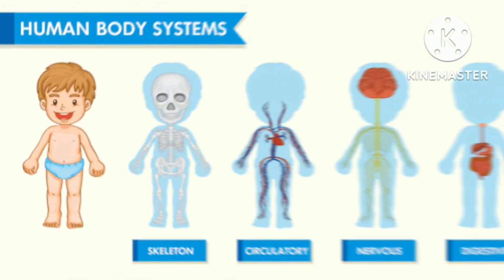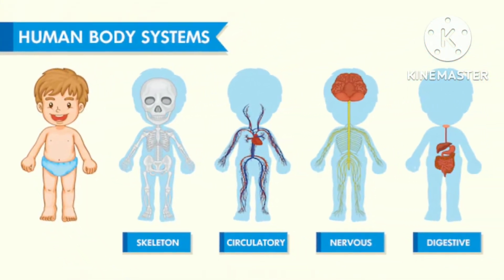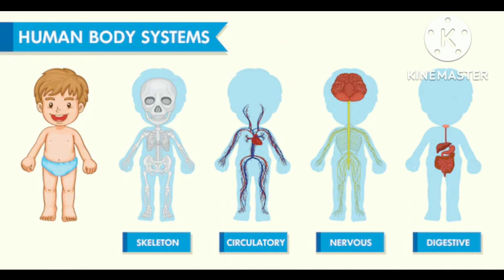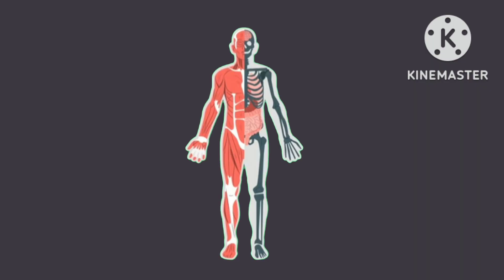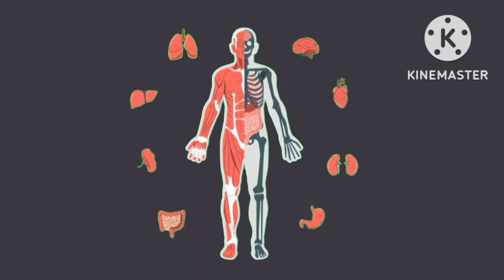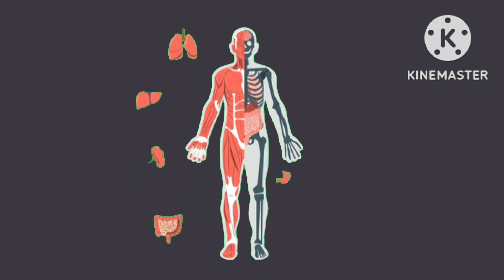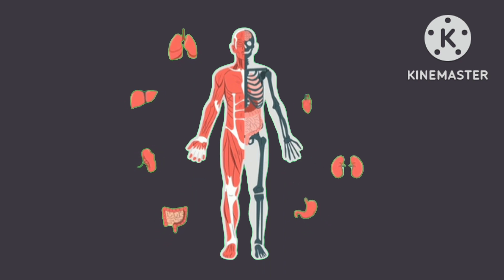Human body systems. There are four types: Skeletal, Circulatory, Nervous, and Digestive. There are eight types of body parts. Now I am going to explain each type of body part individually.